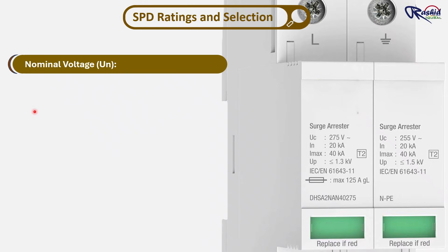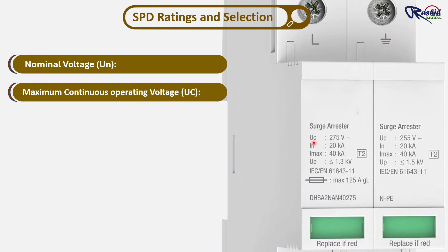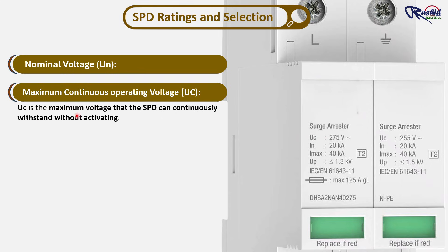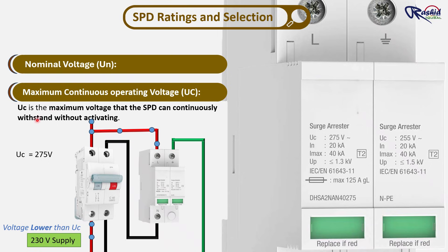Number 2 is maximum continuous operating voltage, UC. This is the highest voltage that the SPD can continuously handle without activating. In other words, as long as the supply voltage stays below the UC rating, the SPD remains inactive and lets power flow normally. It only activates when the voltage goes higher than the UC rating, because it should react only to a surge and not during normal operation.